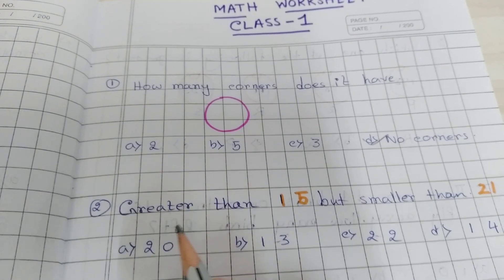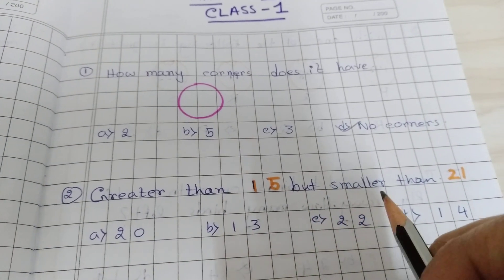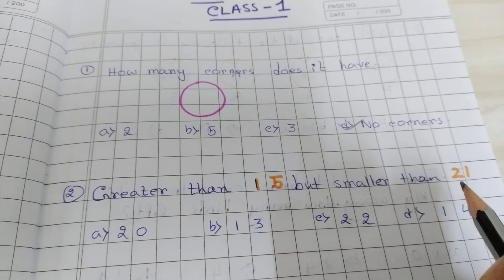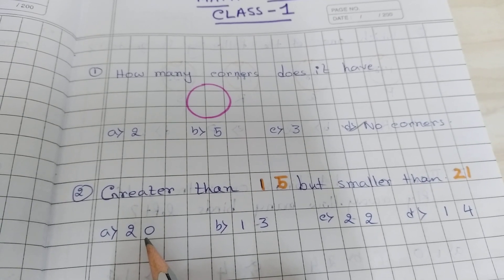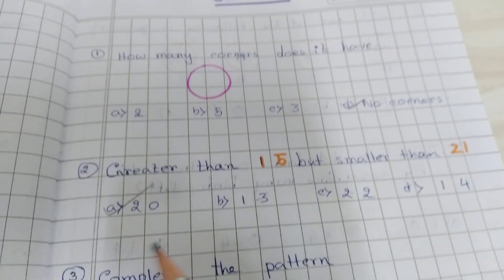Question number 2, greater than 15 but smaller than 21. Smaller than 21 but greater than 15. So option A is correct.